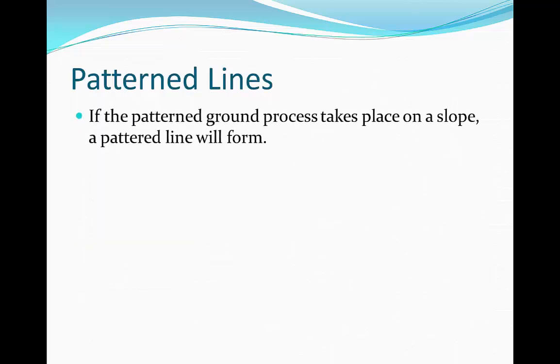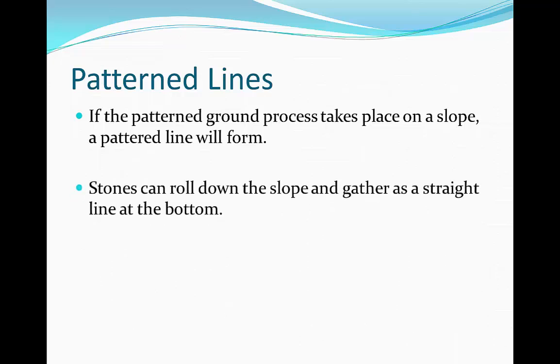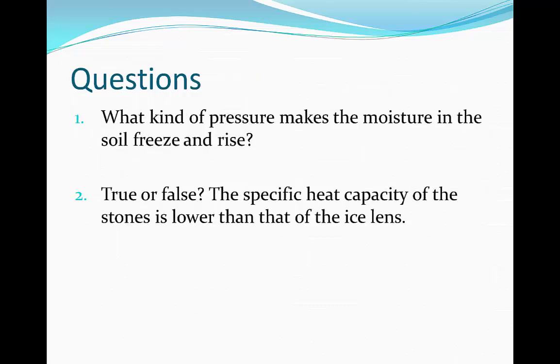Pattern lines are also examples of patterned ground. If the patterned ground process takes place on a slope, a pattern line will form. This happens when the stones roll down the slope and gather as a straight line at the bottom.